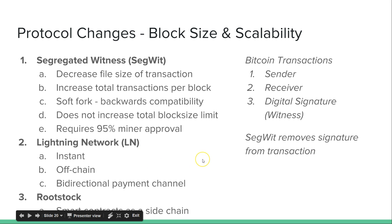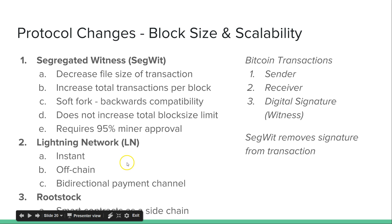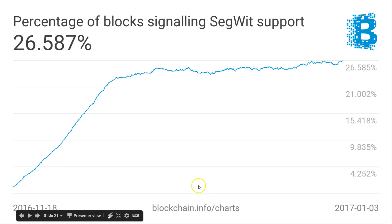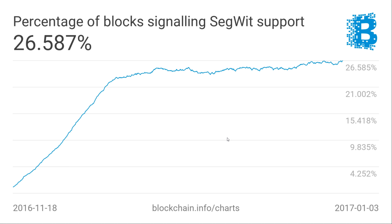Lightning Network and Rootstock are two more protocol changes. Lightning Network is an off-chain instant bidirectional payment channel. Miners may not like this because they lose on mining fees, but users like it because if you're interacting with one person multiple times, you can just keep that channel open. Rootstock is smart contracts on a sidechain — they're part of block size scalability solutions. Regarding SegWit support, it needed 95% for the soft fork to activate. Currently Coin.dance has it at 29% and Blockchain has it at 26.5%, so it's getting there — it might take some time.